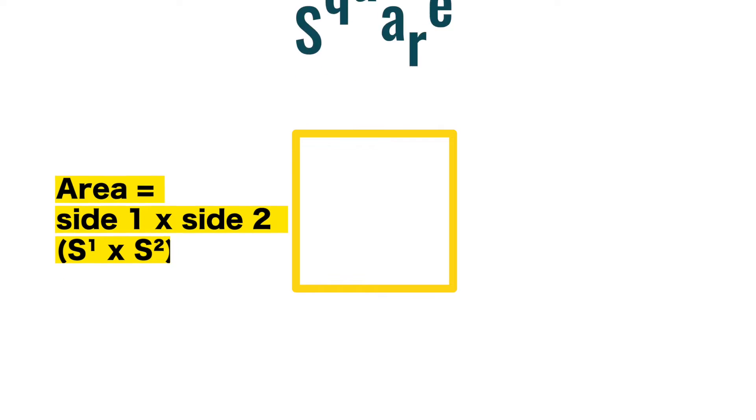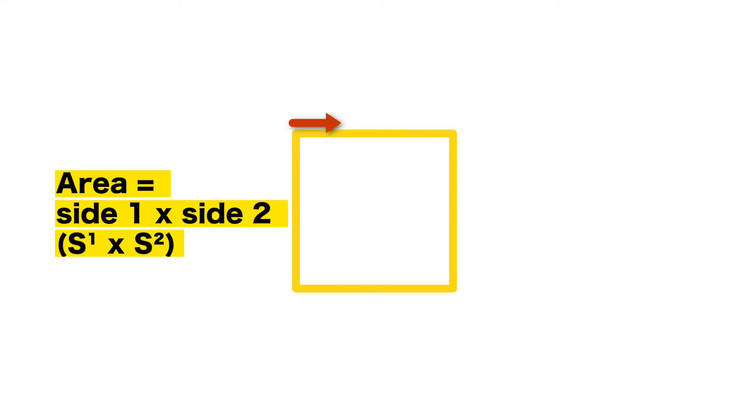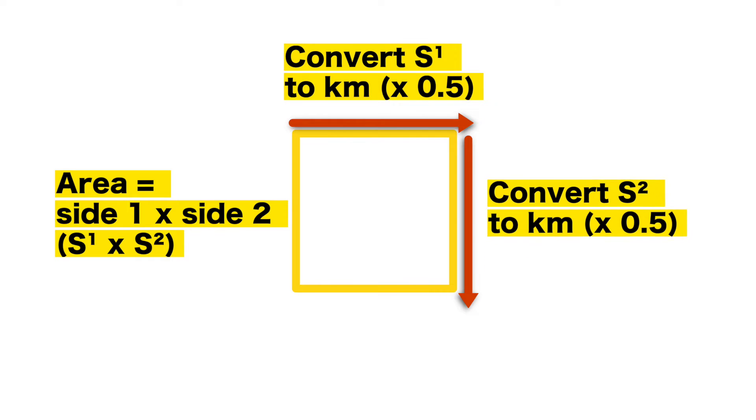Now for a square. A square is very similar to the rectangular shape. The area here is side 1 times side 2, or simply side squared. What you need to do here again, is to convert each dimension, from centimetre to kilometre. So you convert side 1 to kilometre, by multiplying by 0.5 from centimetre. Then you do the same for side 2. You take the centimetre measurement, multiply it by 0.5 to convert it to kilometres.